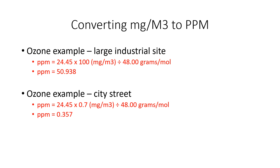If we look at ozone on a city street, sometimes the ozone limit will actually be exceeded just because of all the mobile pollution — cars, trucks, and buses. We use the same formula, but with a reading of 0.7 milligrams per meter cubed, and we come back with 0.357 ppm, which is still over the OSHA permissible exposure limit of 0.1.